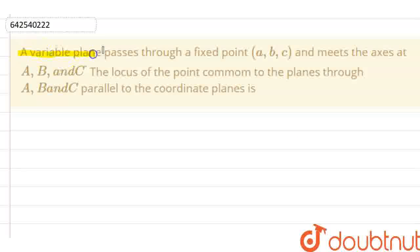The question is: a variable plane passing through a fixed point A, B, C and meets the axes at A, B and C. The locus of a point common to the plane through A, B and C parallel to the coordinate plane is... So now let the plane be x by alpha plus y by beta plus z by gamma equals 1.